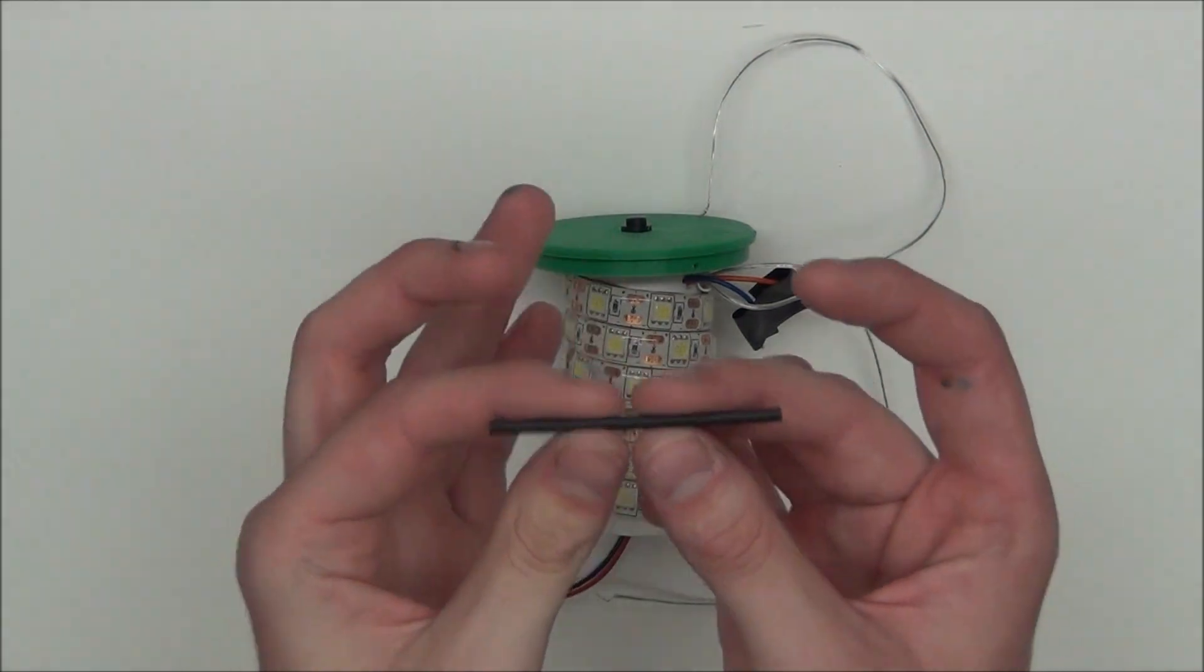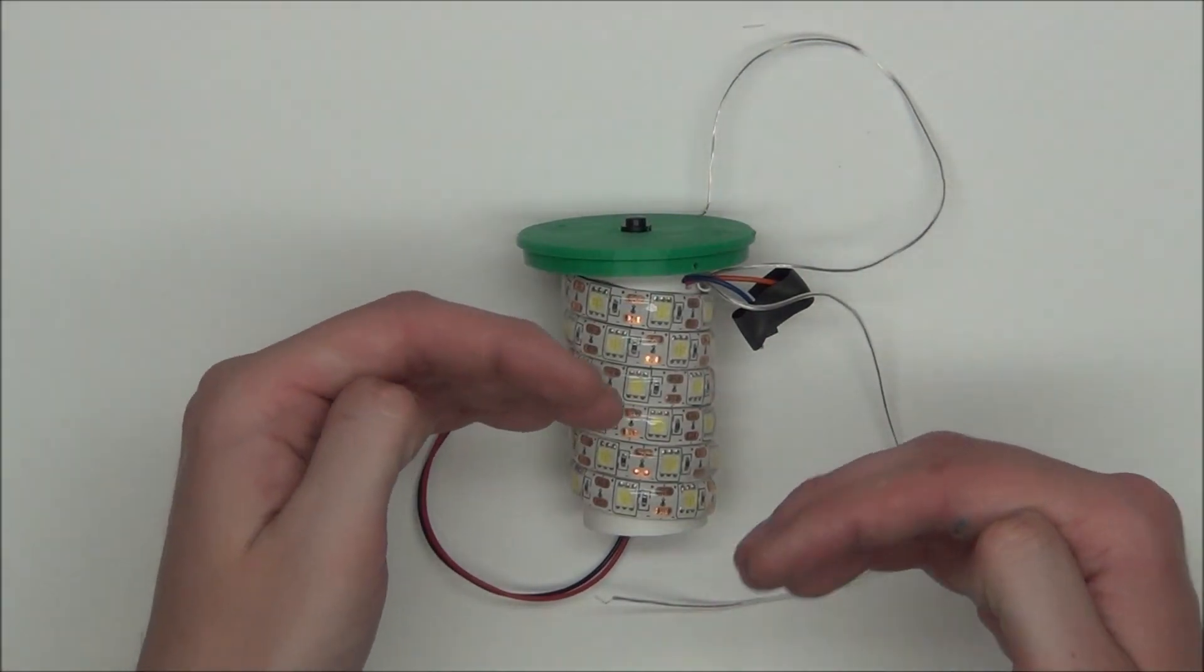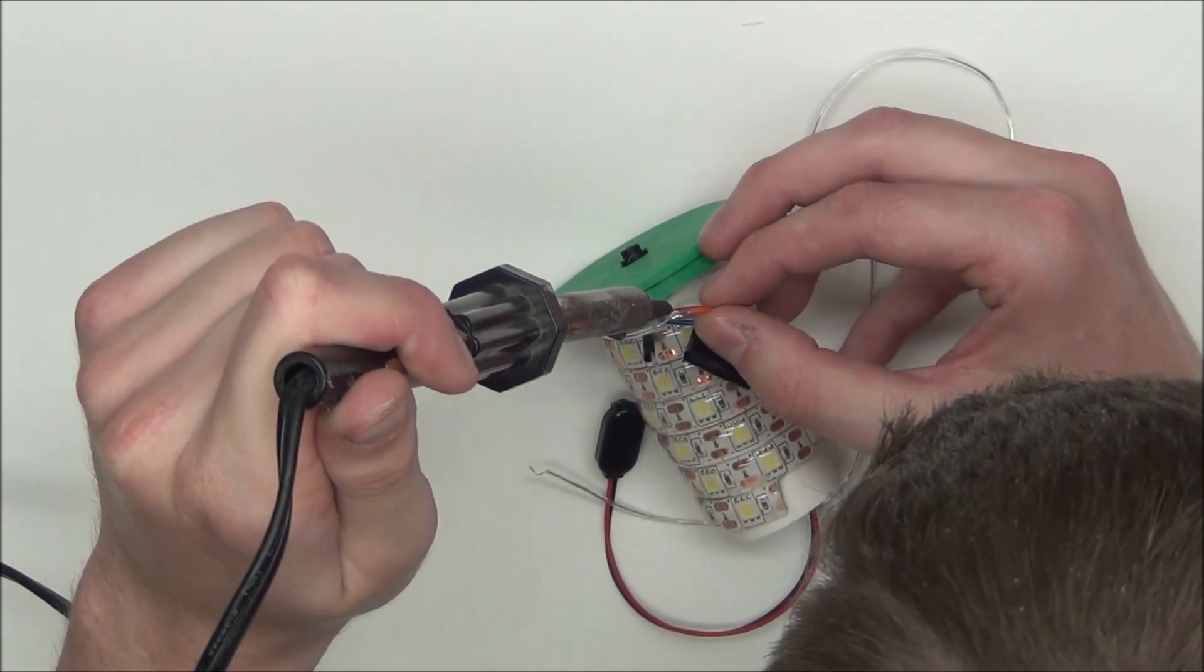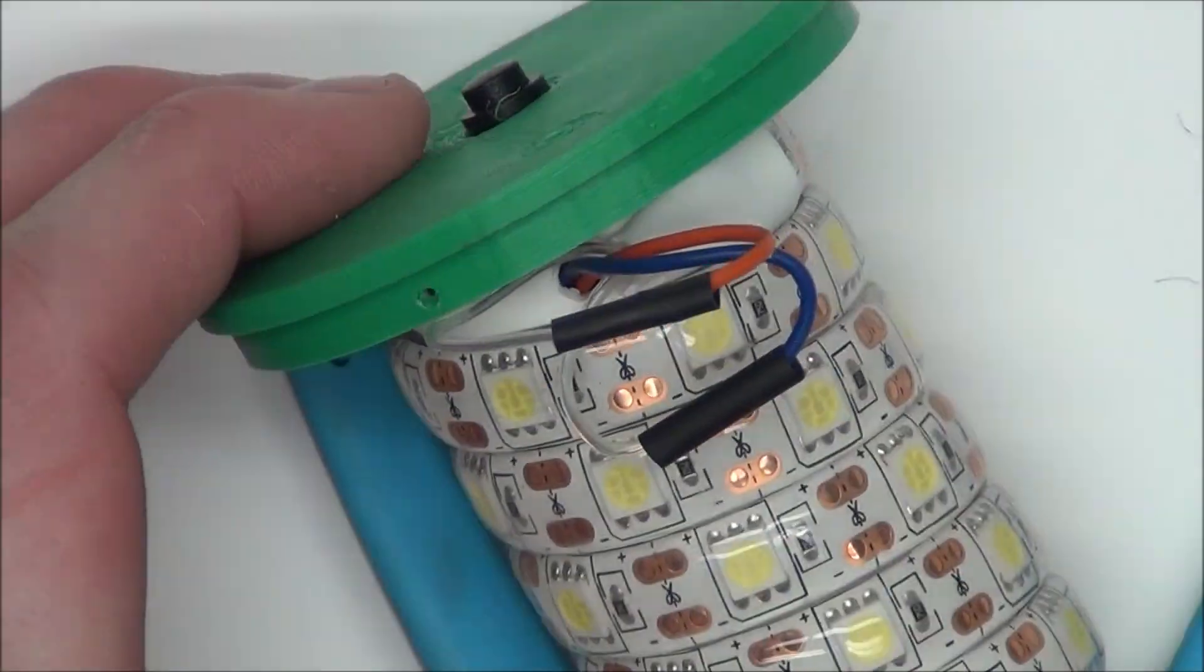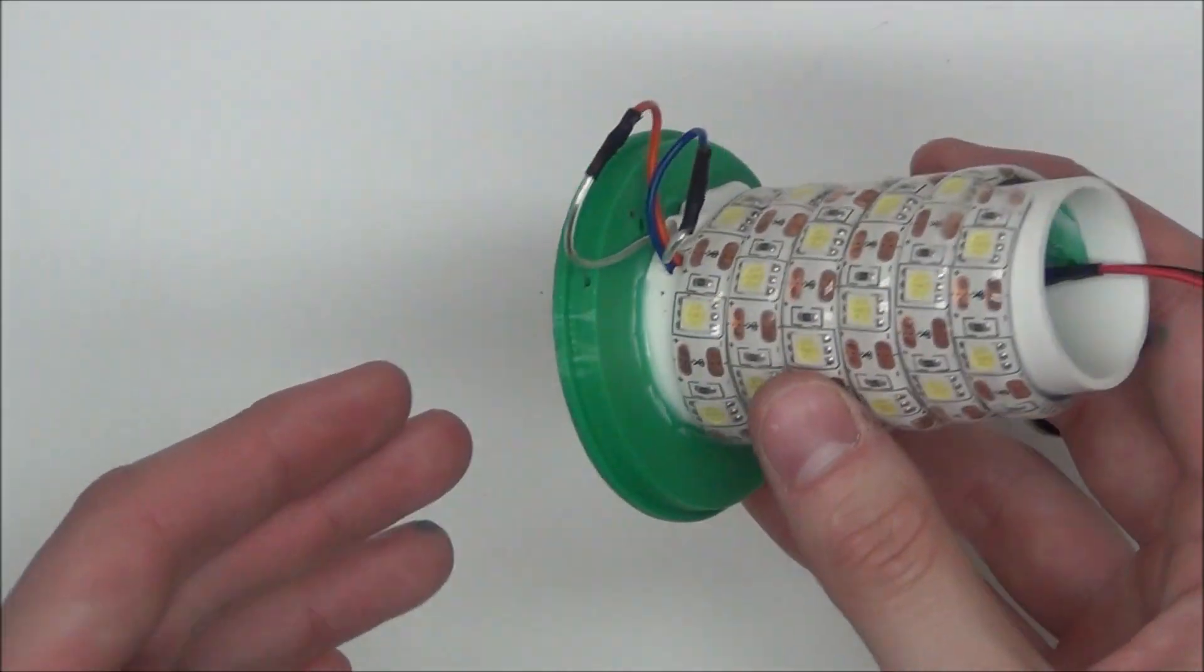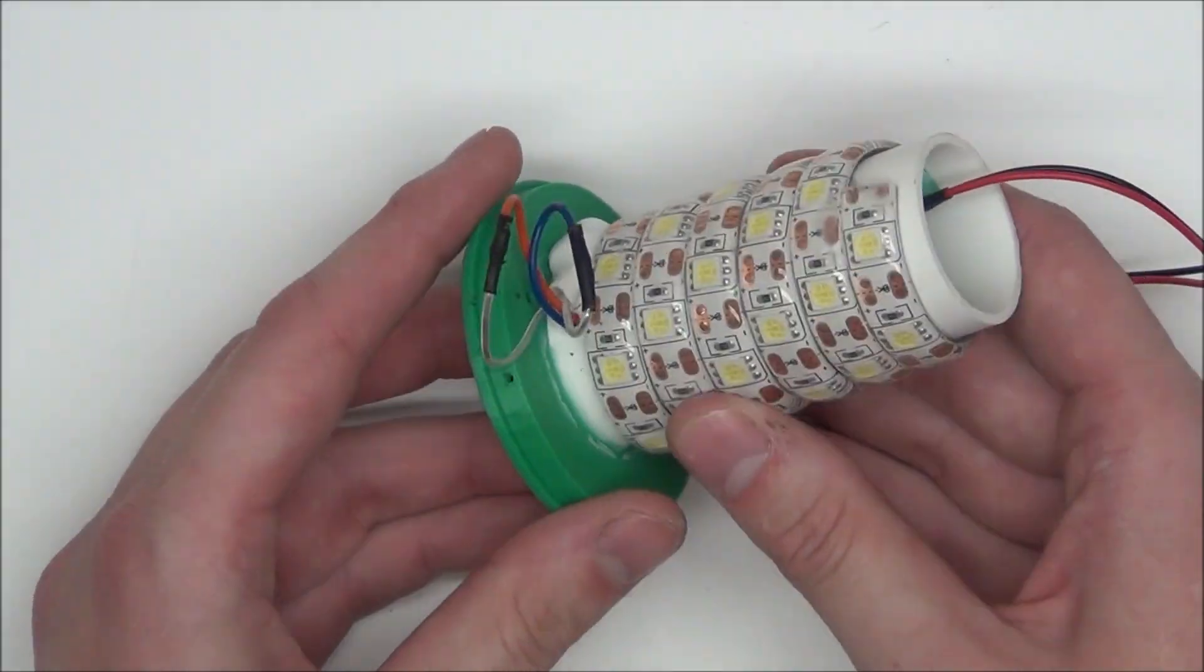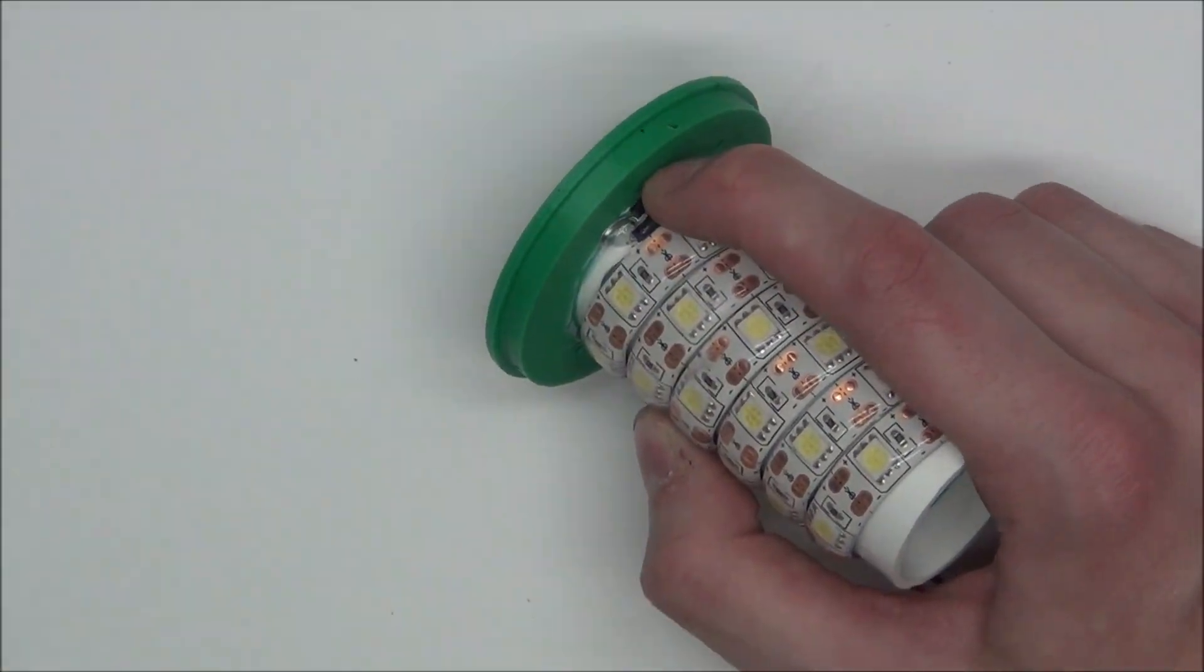So, now we can go ahead and take a little bit more heat shrink tubing and solder our LED leads to our switch leads. Just be careful and make sure you solder the right ones together. Now, we can go ahead and push the wires as far into the pipe as we can, then secure them with some glue.